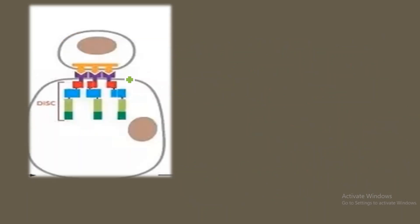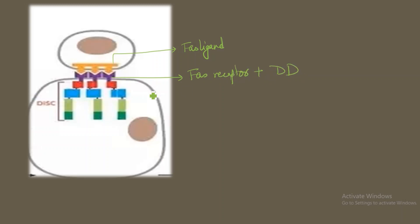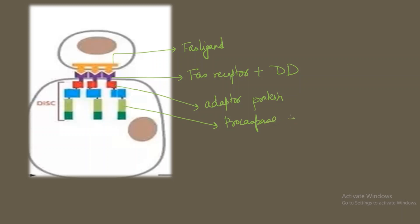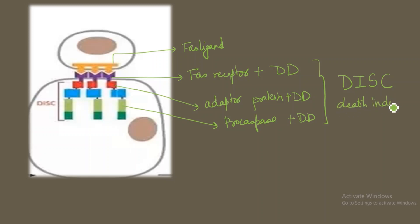So finally these three components — the FAS ligand, the FAS receptor (with its death domain binding the adapter protein), and the adapter protein (binding procaspase 8 via death domain) — together are called the death-inducing signaling complex, or DISC.